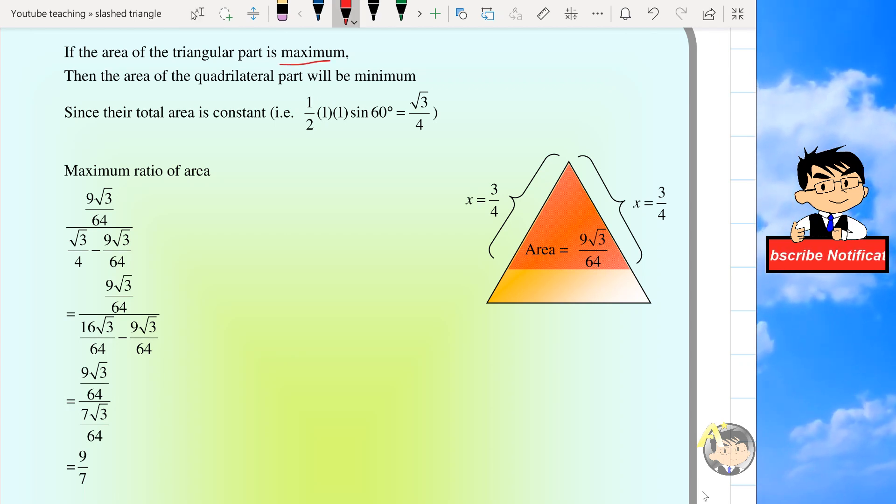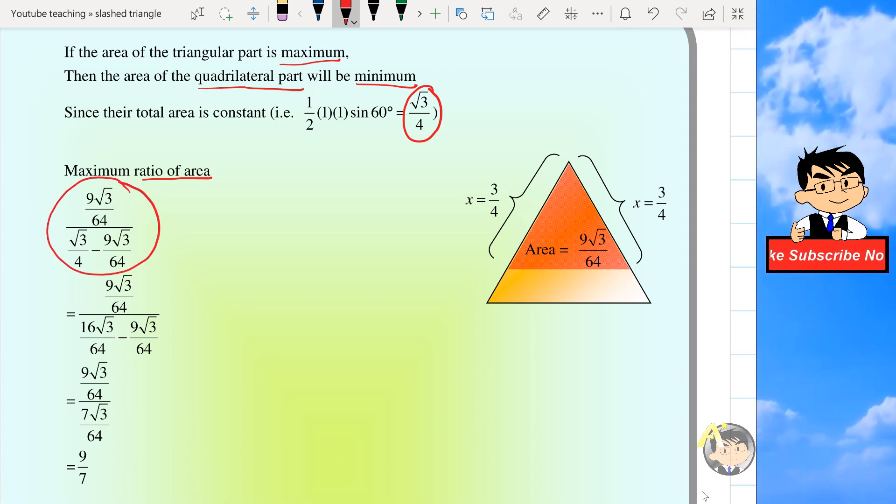So now, if the area of the triangular part is maximum, then the lower quadrilateral part will be minimum since their total area is constant, which is root 3 over 4. So the maximum ratio of the area between them will be this expression. So after some simplification, we'll get 9 over 7.